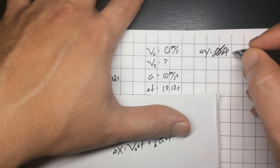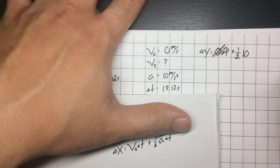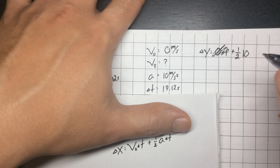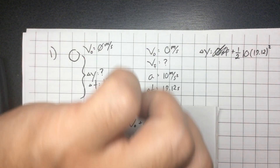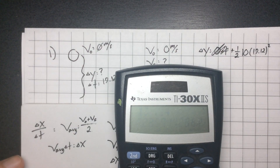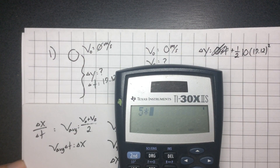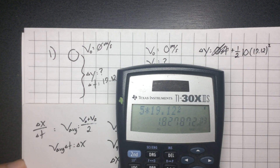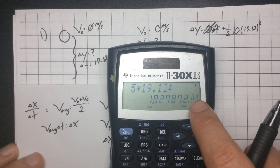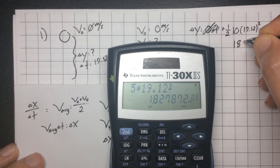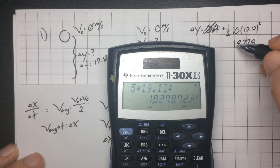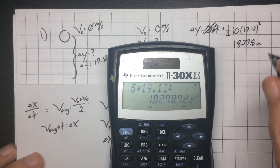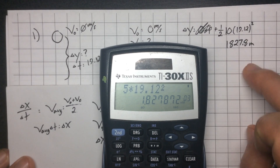Plus one-half the acceleration — that's 10, or negative 10 if you want down to be negative — times time squared. That time for me is 19.12 seconds. Half of 10 is 5, so that's 5 times 19.12 squared. I'm using scientific notation, and I'm getting 1827.8. I have times 10 to the third power, so that moves the decimal over three times — that's going to be in meters. Looking at my quiz, the answer is exactly 1827.87 meters.